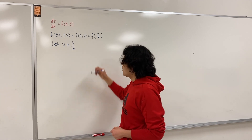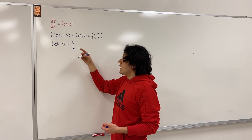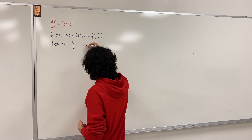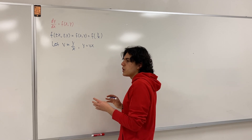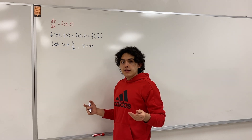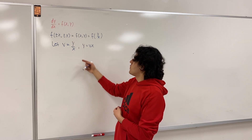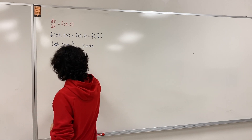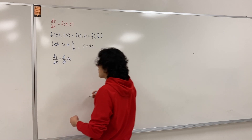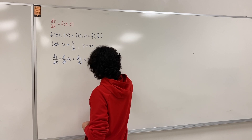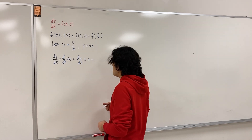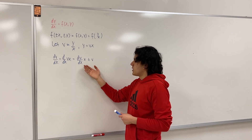Once you do this substitution, you rewrite every y in the function f by saying y equals v times x. This gives you a right-hand side that is a function in terms of v and x. Then you can rewrite dy/dx in terms of v by differentiating: dy/dx equals d/dx of (v times x), and using the product rule you get dv/dx times x plus v.